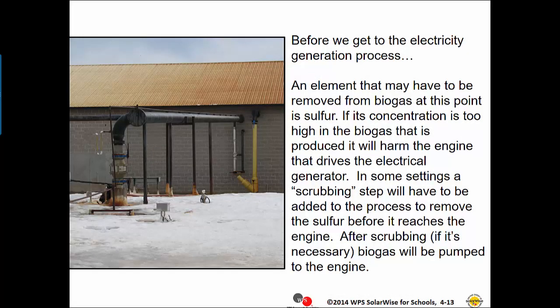Before we get to the electricity generation process, an element that may have to be removed from biogas at this point is sulfur. If its concentration is too high in the biogas that is produced, it will harm the engine that drives the electrical generator. In some settings, a scrubbing step will have to be added to the process to remove the sulfur before it reaches the engine. After scrubbing, if it is necessary, biogas will be pumped to the engine.